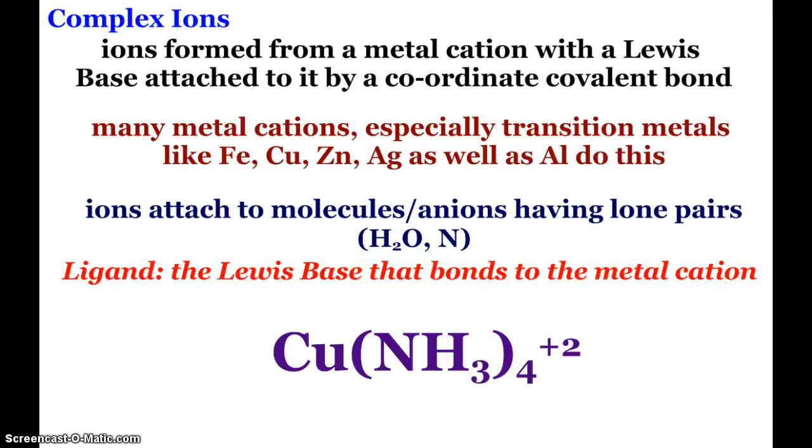So the coordinate covalent bond meaning that both electrons in a bond coming from one species. So these metal cations small little metal cations like our transition metals and aluminum attach to molecules or ions having lone pairs. Water extremely common, nitrogen compounds extremely common like ammonia because both of the electrons can come from the lone pair and attach to those positive metal ions.